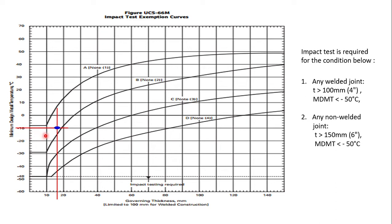However, impact test is required for the condition below. Any welded joint with thickness more than 100 mm, or any non-welded joint with thickness more than 150 mm, and their MDMT is more than minus 50 degree Celsius, then the impact test is required. This also shows that this curve is limited to 100 mm for welded construction.